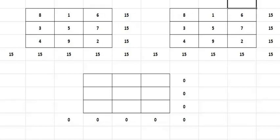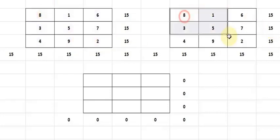Before going into magic square multiplication, we will see what is matrix multiplication. So this is a 3×3 magic square, and again we are using the same 3×3 magic square here, because in 3×3 there is only one 3×3.